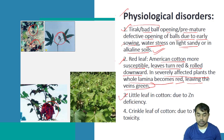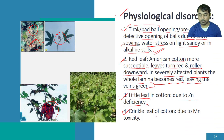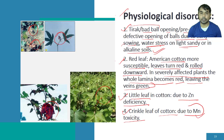The third physiological disorder is little leaf in cotton, which happens because of zinc deficiency. And crinkle leaf of cotton is caused by amine toxicity — you can see the crinkling of the leaf, and the reason behind it is amine toxicity.